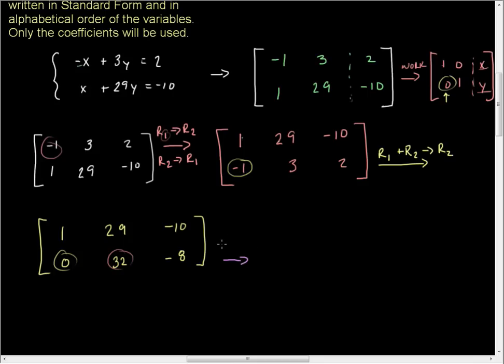I am going to multiply row 2 by 1/32 and put that result in row 2. Again, row 1 does not change, so I'm just going to copy that over. 0 times 1/32 is 0. 32 times 1/32 is 1. Any number times its inverse is 1. Negative 8 times 1/32 is negative 1/4.